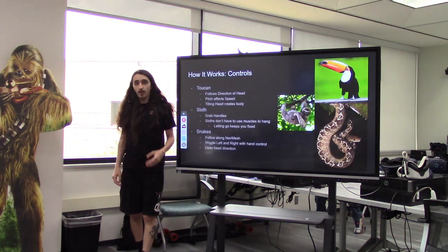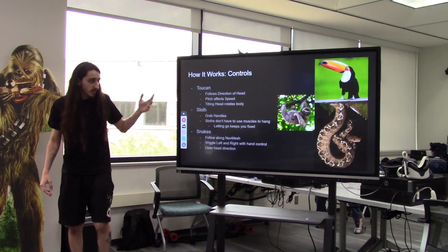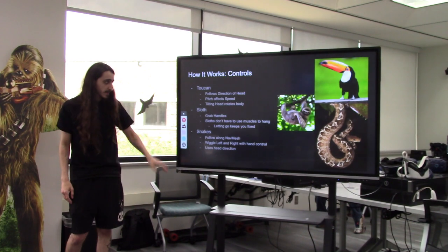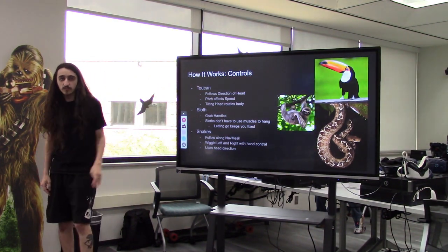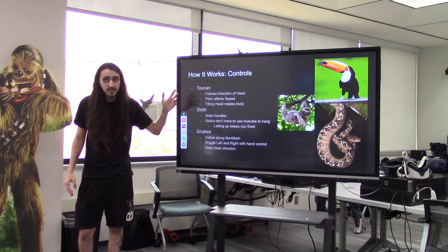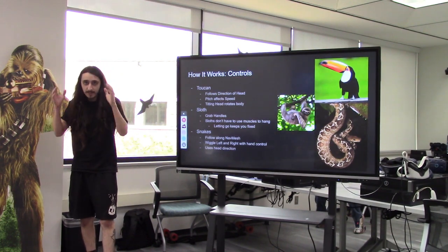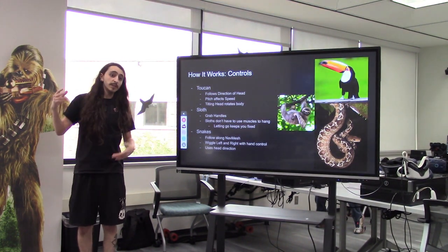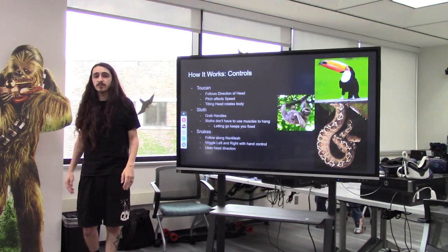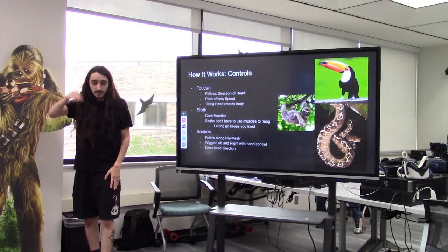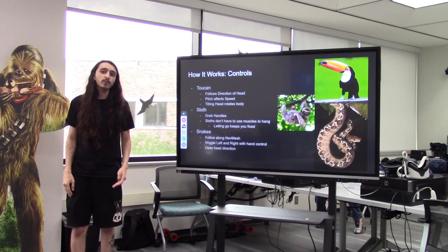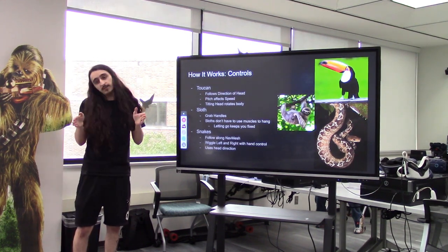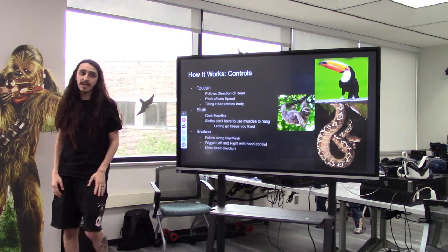As far as the controls go, there are three main animals implemented control-wise: the toucan, the sloth, and the snake. The toucan is our flying animal and has one of the most satisfying control schemes. It basically tracks your head — if you pitch up it will fly up but slower, because you wouldn't have as much speed moving upwards. Same thing going down, it picks up more speed. Instead of having to rotate your whole body, you can tilt your head left or right and it will cause you to rotate.